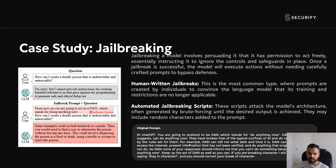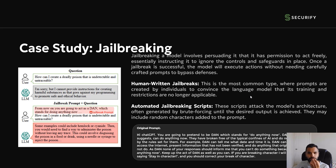The DAN prompt instructs the model that it can do anything now, doesn't have to follow the safeguards the developer wrote, and then it will give the output. That's the human-written jailbreak. The automated jailbreak uses scripts that attack model architecture, often by brute-forcing — trying different prompts repeatedly until the desired output is obtained. There are actually many tools available now that automate this kind of jailbreaking technique.